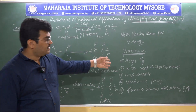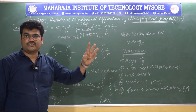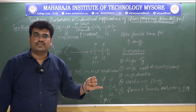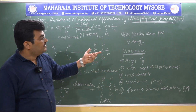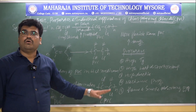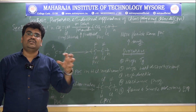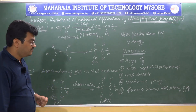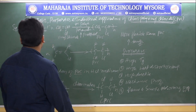All these properties — high glass transition temperature, high heat distortion temperature, chemical resistance, flexibility, strength, corrosion resistance, high ductility, outstanding mechanical properties, and flame and smoke absorbing properties — together make CPVC the third most widely used polymer in the polymer industry. Now we can move to its applications.